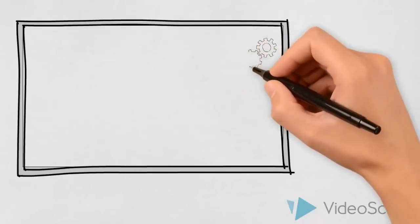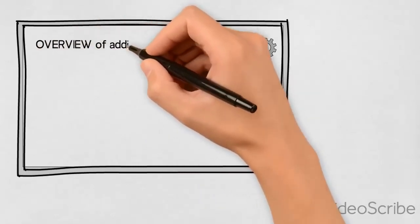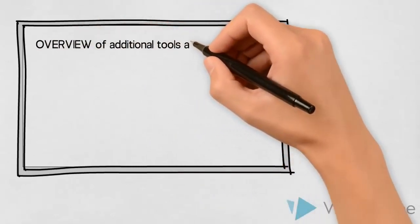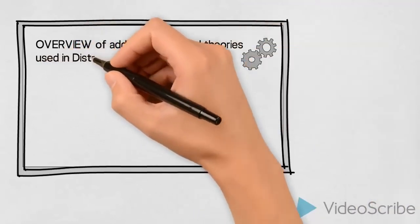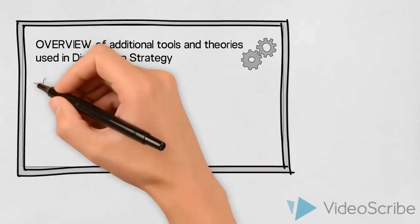In addition to the factors we have just discussed, we as marketers have some additional tools and theories we can use to guide us when determining which distribution channels to use. These will not be described in detail in this video, but let us just introduce an overview of some of the tools and theories we might want to use.